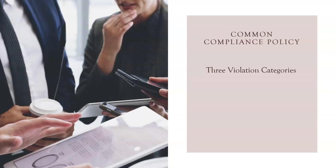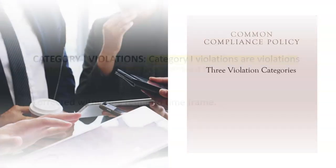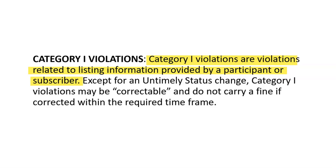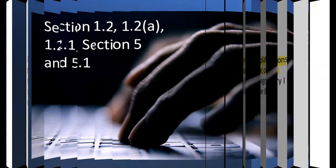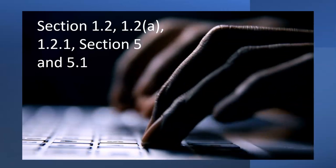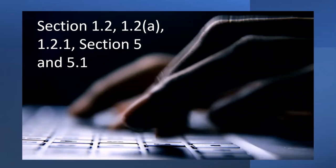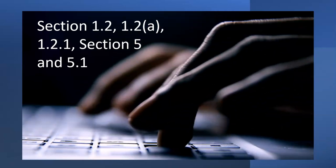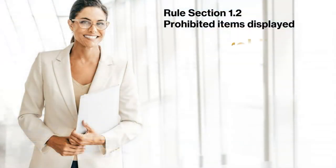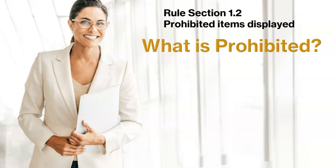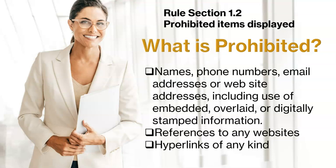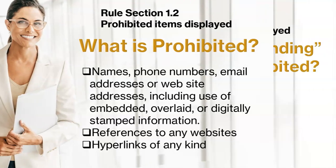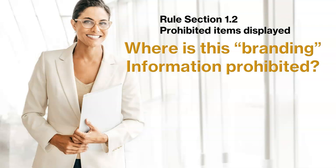Here is a look at the three violation categories. Category 1 violations are related to listing information provided by a participant or subscriber. Category 1 includes sections 1.2, 1.2a, section 5 and 5.1. What is prohibited in the Triad MLS system? Names, phone numbers, email addresses, website addresses, including the use of embedded, overlaid, or digitally stamped information, references to websites and hyperlinks of any kind.